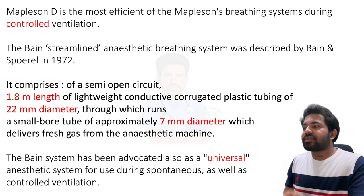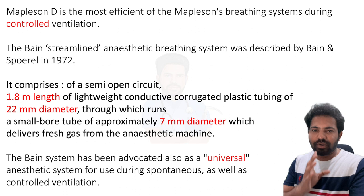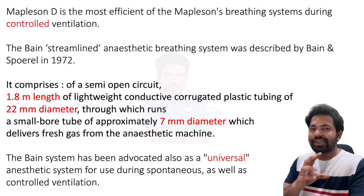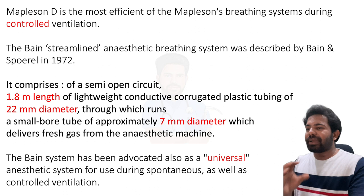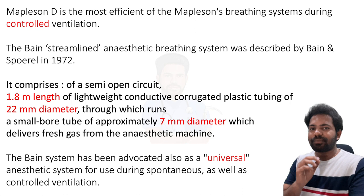The Bain circuit comprises a semi-open circuit. It is 1.8 meters or 180 centimeters in length. It is a lightweight, portable, conductive, corrugated plastic tubing with a 22 mm diameter outer tube which is transparent. It also has a small bore 7 mm diameter inner tube which delivers the fresh gas flow from the anesthetic machine to the patient. The Bain system has been advocated as a universal anesthesia system because it can be used in both spontaneous as well as controlled ventilation.